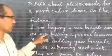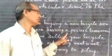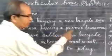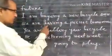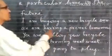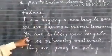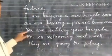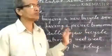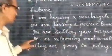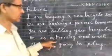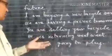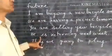'We are having a picnic tomorrow.' Tomorrow is future time, but here we are using present continuous: 'We are having a picnic tomorrow.' We add future time with it, so it becomes future time. 'You are selling your bicycle' — means very soon, you decided to sell it. 'He is returning next week' — that means he will come next week, expressing future time.